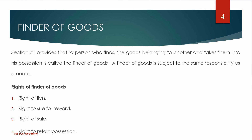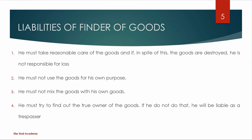Next is the right to retain possession. The finder can keep the goods against the whole world, except the true owner. If there is no owner found, the finder can keep the goods. These are the rights of the finder of goods.